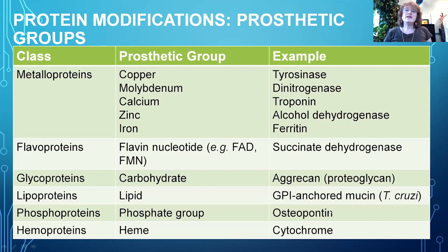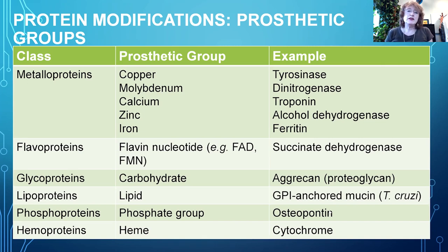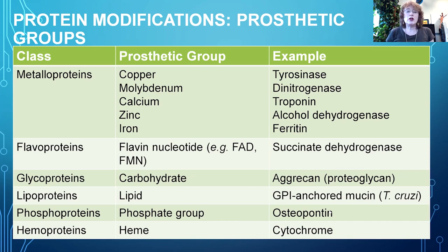So what are these different prosthetic groups? These are very difficult to remove from a protein. However, their presence is integral to protein or enzyme function. The first two types of prosthetic groups we're not going to cover in depth today, but they include what are called metallo or metal groups.